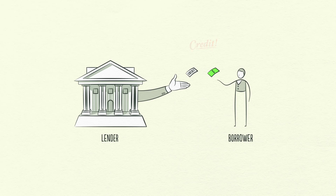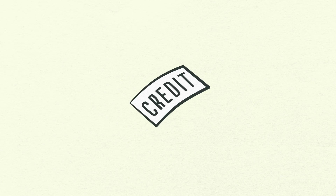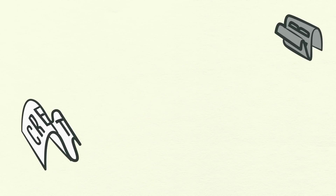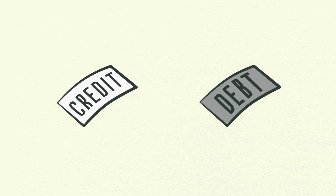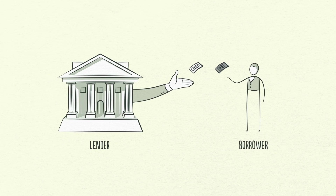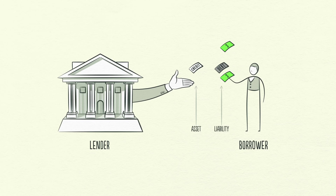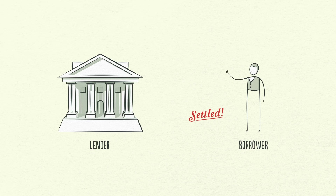Credit is tricky because it has different names. As soon as credit is created, it immediately turns into debt. Debt is both an asset to the lender and a liability to the borrower. In the future, when the borrower repays the loan plus interest, the asset and the liability disappear and the transaction is settled.